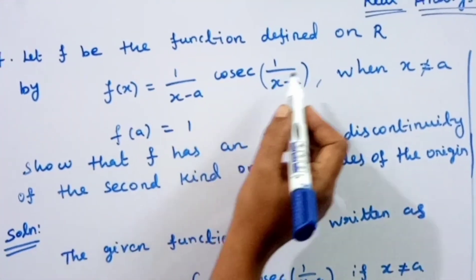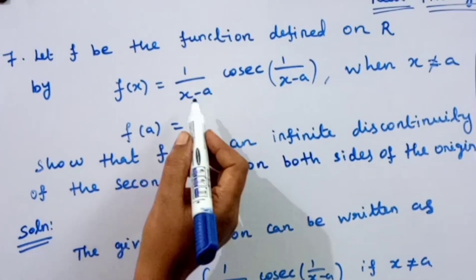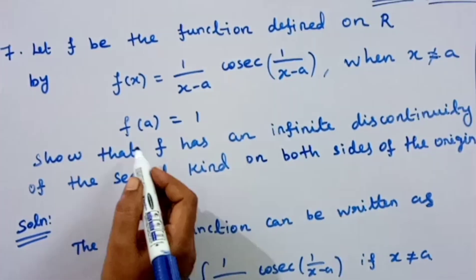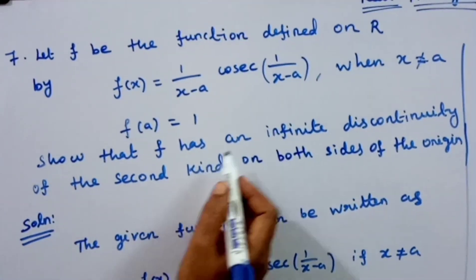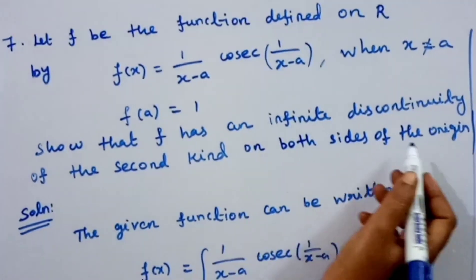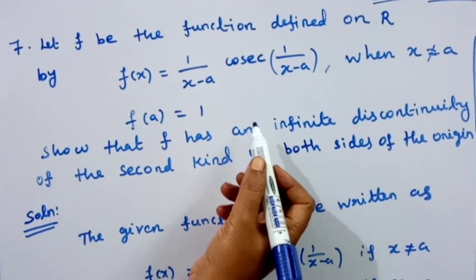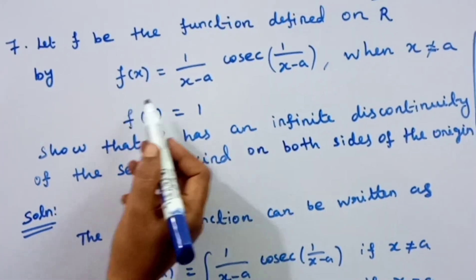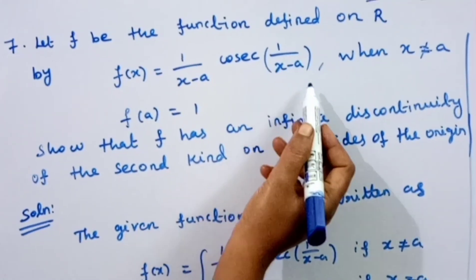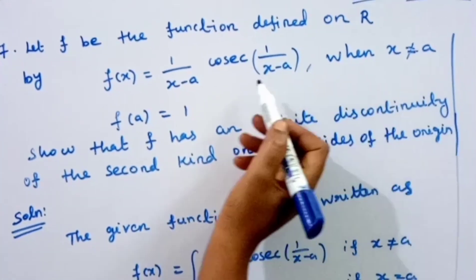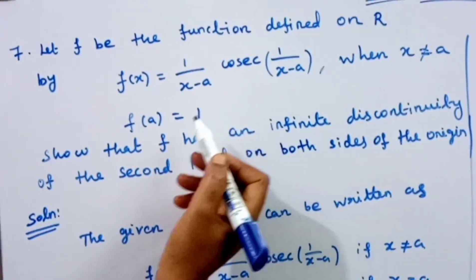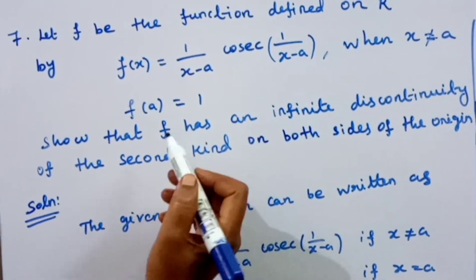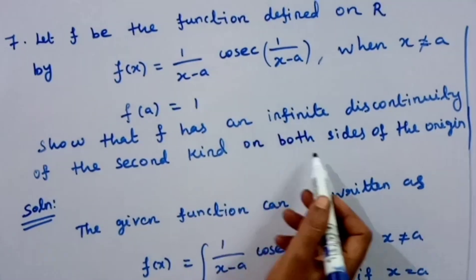Let f be the function defined on R by f(x) = (1/(x-a))·cosecant(1/(x-a)) when x is not equal to a, and f(a) = 1. Then show that f has an infinite discontinuity of the second kind on both sides of the origin. The function has infinite discontinuity of the second kind on both sides, and we will prove that.